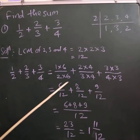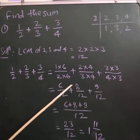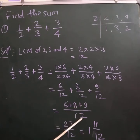So in like fractions, we have to add the numerators with common denominator. So we add 6 + 8 + 9 divided by 12. Now 6 + 8 + 9 equals 23 divided by 12.